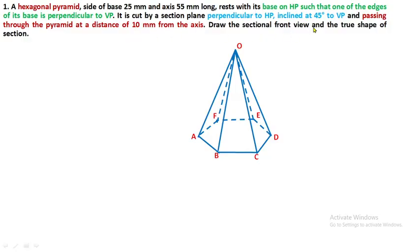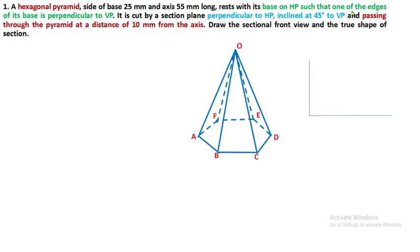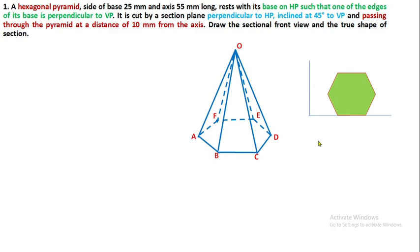Draw the sectional front view and find the true shape of section. First we will confirm the position of the top view hexagon. One of the edges of the base is perpendicular to VP, being base on HP. This edge, which is on HP, is perpendicular to VP. After rotation of 90 degrees, this edge becomes perpendicular to XY.